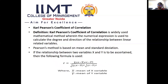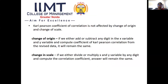Karl Pearson coefficient of correlation is a widely used mathematical method in which a numerical expression is used to calculate the degree and direction of the relationship between linearly related variables. The Pearson method is based on mean and standard deviation. It is independent of change of origin — if any constant is added or subtracted from x or y, the coefficient remains the same — and independent of change in scale — if x and y are multiplied or divided by any constant, the answer remains the same.